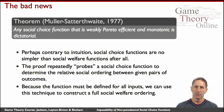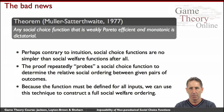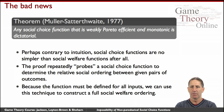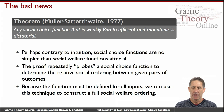This is the bad news: the Muller-Satterthwaite theorem tells us that we can't have all three. If a social choice function is Pareto efficient and monotonic, it must be dictatorial. And so after all, social choice functions aren't more benign than social welfare functions.